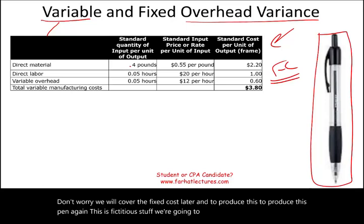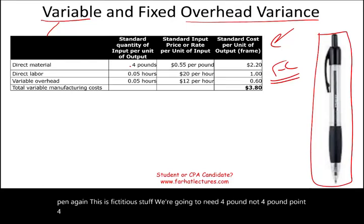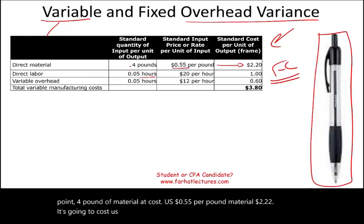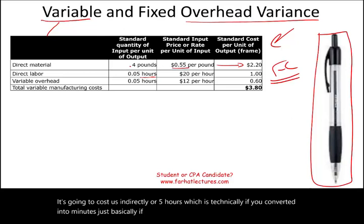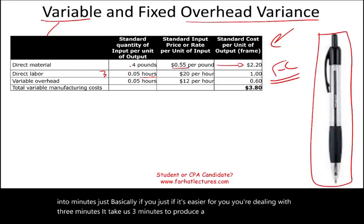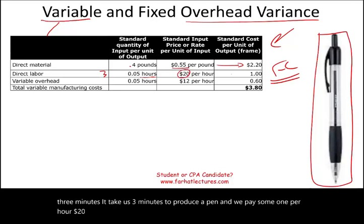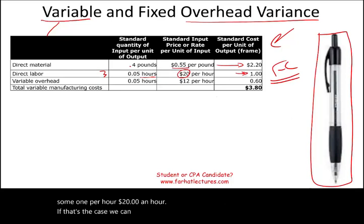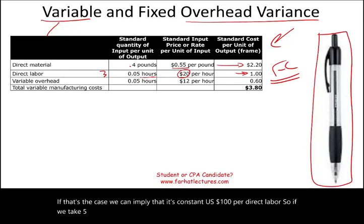To produce this pen, we're going to need 0.4 pound of material. It costs us 55 cents per pound — material cost $0.22. It's going to cost us 0.05 hours of direct labor — which is basically three minutes to produce a pen — and we pay someone $20 an hour. Therefore, it's costing us $1 per direct labor hour, since 0.05 times $20 equals $1.